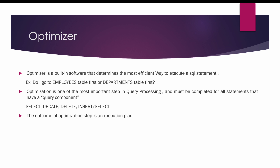When the optimizer chooses among different plans, say for example there is a select query with a join between the employees table and the departments table, the optimizer can choose whether accessing the employees table first or accessing the departments table first will lead to the least cost. Based on whichever access path generates the least cost, that plan will be picked up.